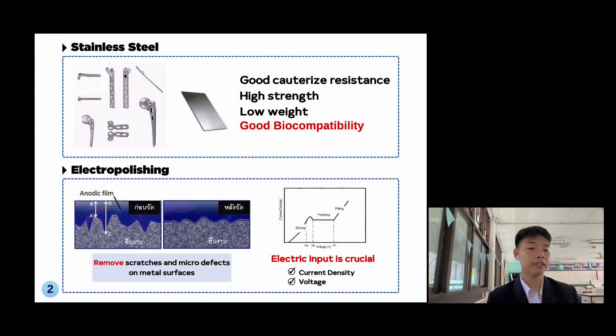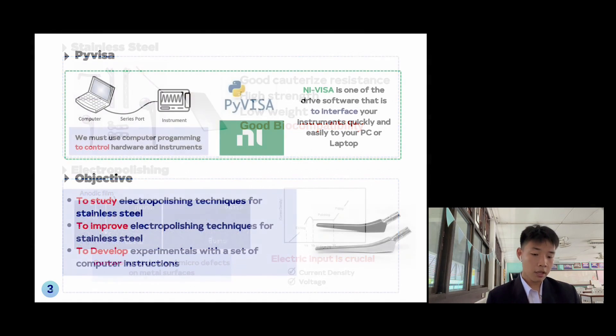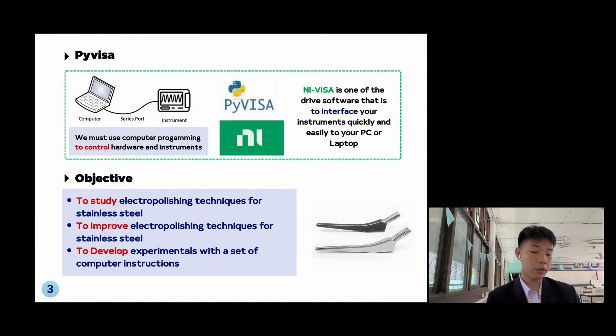Stainless steel has good corrosion resistance, high strength, low weight, and good biocompatibility. From such problems, the method that we will use to solve the problem is electropolishing. It is a process to remove scratches and micro defects on metal surfaces. We encountered some problems during the experiment in changing voltage and collecting data. We must use computer programming to control hardware and instruments by PyVISA software.